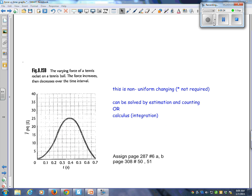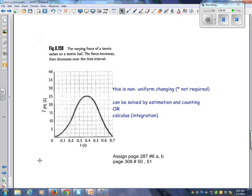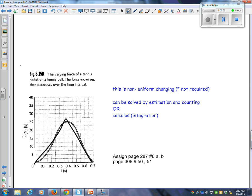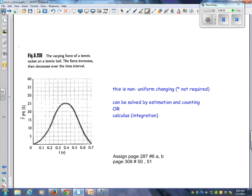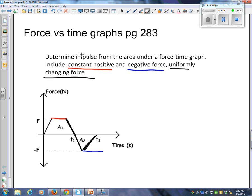What if you've got something like this? Have you guys seen a bell curve before yet? Stats class? So here we've got the varying force of a tennis racket on a tennis ball. The force increases and then decreases over the time interval. So it's very similar to that triangle idea here, except that it's got a bit of a curve to it. In fact, it looks to me to be like a bell curve, which I'm not convinced this would be actually what you'd get if you hit a tennis ball with a tennis racket. But anyways, if you go back and look at what the outcome said at the start, it said include constant positive and negative force and uniformly changing force.